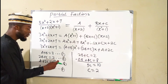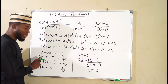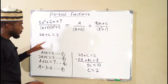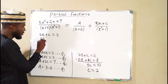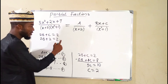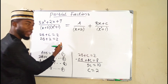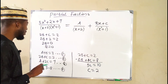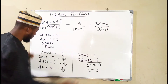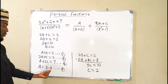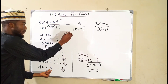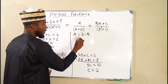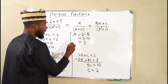Having obtained c equals 2, we substitute into equation 2 to find b. From equation 2: 2b plus c equals 2, and c is now 2, so 2b plus 2 equals 2. Taking 2 to the right: 2b equals 0, and therefore b equals 0. Now substituting b into equation 4: a equals 3 minus b equals 3 minus 0 equals 3. Hence a equals 3.